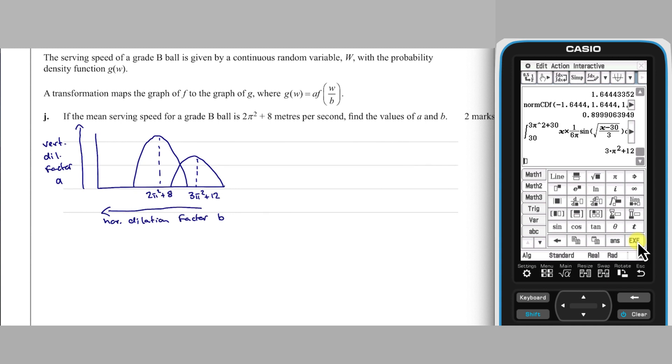Based on the horizontal dilation, we can see that B times by the mean of 3 pi squared plus 12 equals the mean of 2 pi squared plus 8. This tells us that B equals 2 thirds.